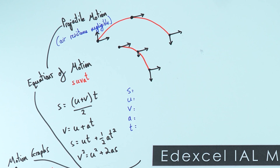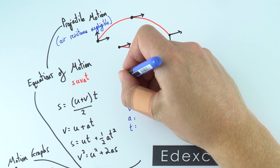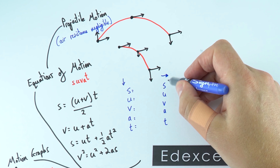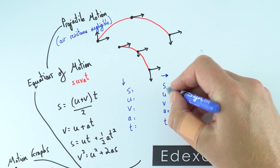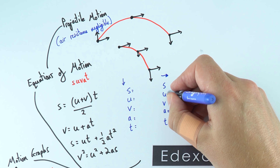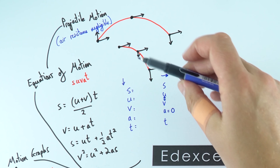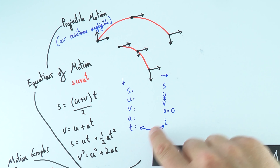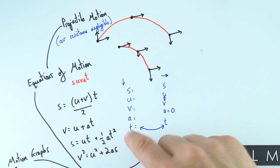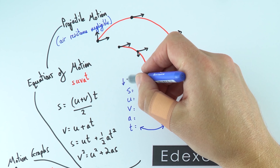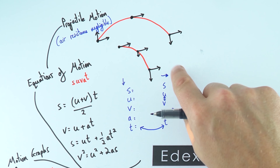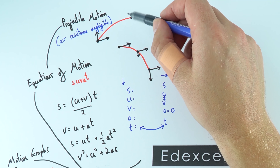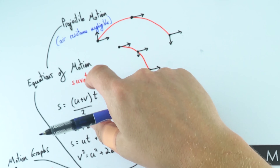My top tip is to write out SUVAT for both the vertical direction and the horizontal direction. In the horizontal direction, because there's no air resistance, acceleration is zero, meaning the initial and final velocities U and V are the same throughout. You can then identify known quantities from the question. Often, the time is the same horizontally and vertically — this is a key link. Also make sure to label which direction is positive: if upwards is positive, you'd have a negative acceleration of 9.81 m/s² throughout. Projectile motion is the ultimate test of knowing your equations of motion.